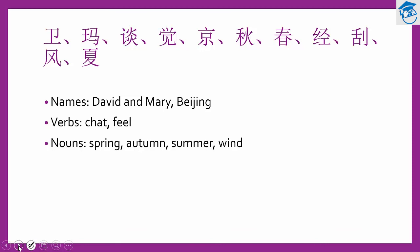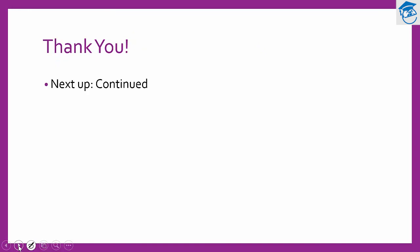In the next lesson, we'll speak more in depth about weather and also some travelling plans. In this lesson, you have learned all the Chinese words shown on the slide. In English, you have learned how to say David, Mary, and Beijing. You also learned verbs such as 谈 and 觉得, and nouns: spring, autumn, summer, and wind. Thanks for watching — see you in the next video! 谢谢！再见！